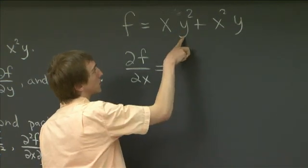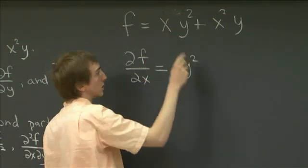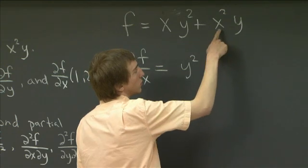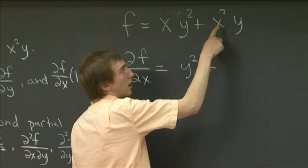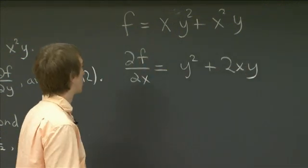So the derivative of this in the x direction is just y², because we only differentiate the x here. Similarly here, the derivative of x² is 2x, and y just comes along for the ride as if it were a constant.